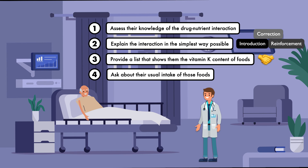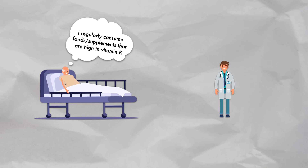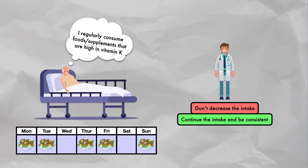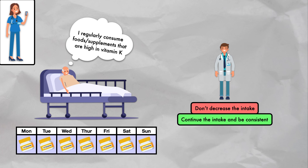Then I ask about their usual intake of those foods, including probing questions to get an idea of their overall diet pattern. I also ask if they take any dietary supplements and review the contents. If the patient consumes a lot of foods or supplements high in vitamin K, I generally don't instruct them to decrease their intake unless I discover a supplement I think is problematic. I encourage them to continue and be consistent — for example, if they eat a spinach or kale salad four to five times per week, that's fine, but they can't just stop suddenly. If any drastic changes occur or are anticipated, they should notify their doctor immediately, as the dosage may need to be adjusted.